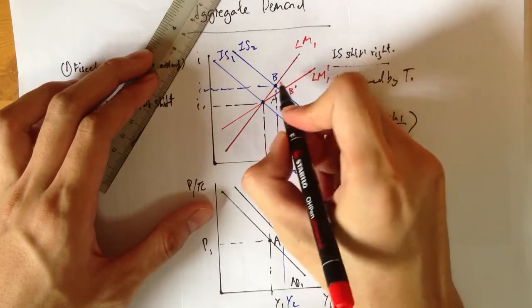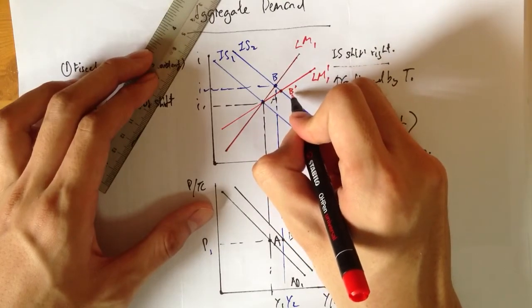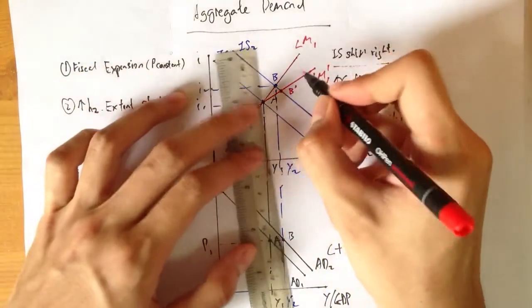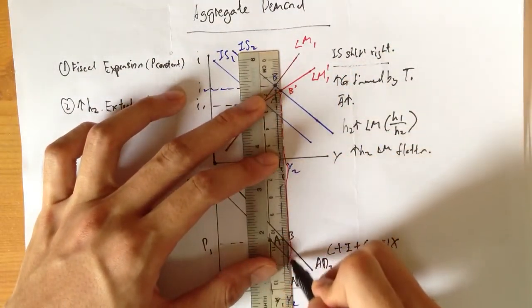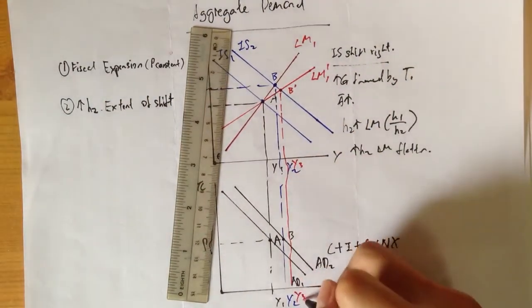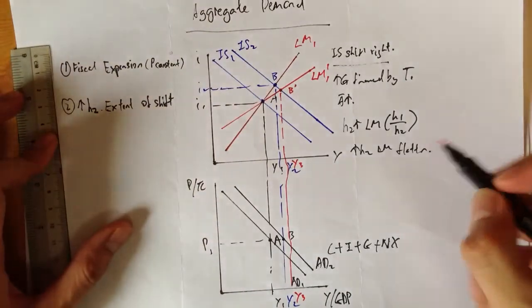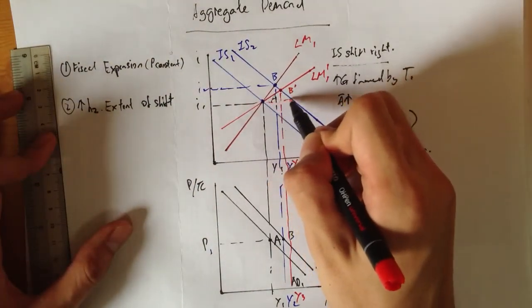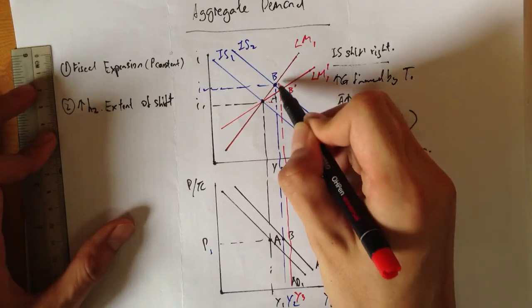Instead of at B, you will now reach this new point indicated by B prime. The diagram is pretty messy, I'm sorry for that. But as you guys can see, there is actually a smaller crowding out effect as compared to a steeper LM.